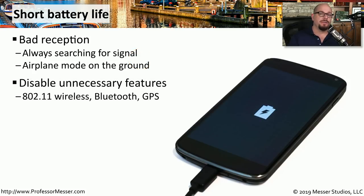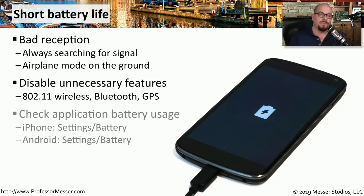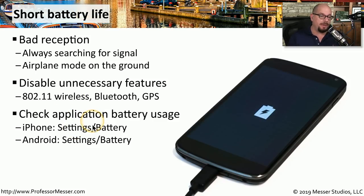Other radios inside the device are also using battery. So if you're not using 802.11 wireless, Bluetooth, or GPS, you may want to disable those features as well. The manufacturers give you insight into battery use — on an iPhone go to Settings > Battery, and on Android go to Settings > Battery to see how much battery is remaining and get a breakdown of how much each application has used.